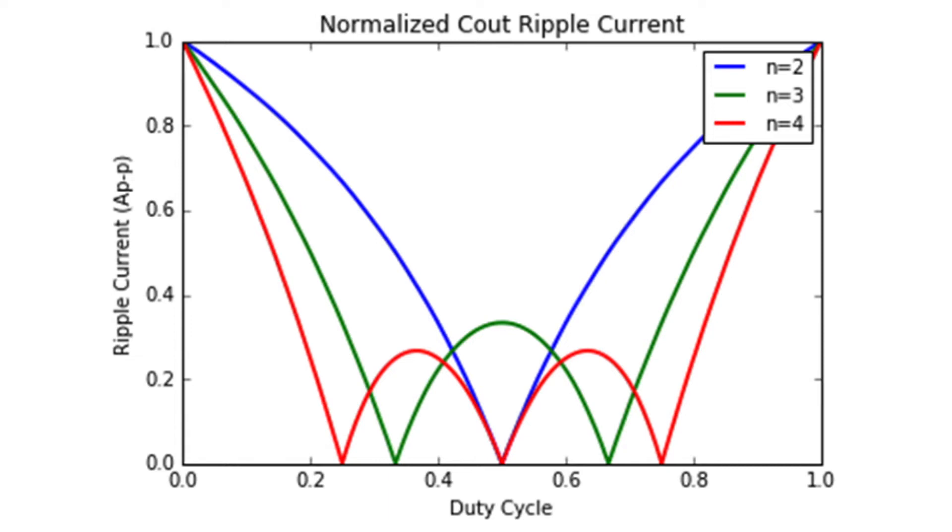However, since the output capacitors are typically clustered into one small area of the PCB, instead of distributed evenly between the inputs of each phase, you can see more capacitance reduction for C-out than C-in.